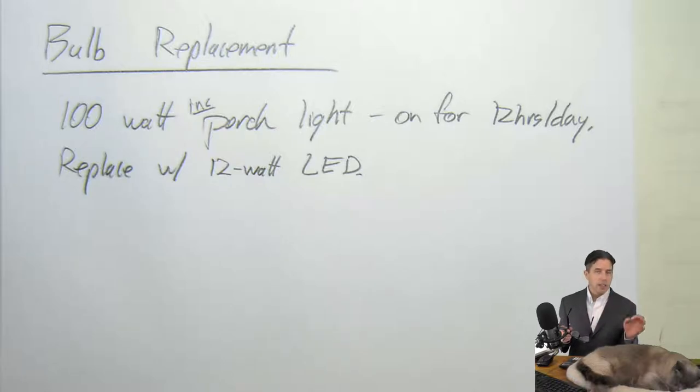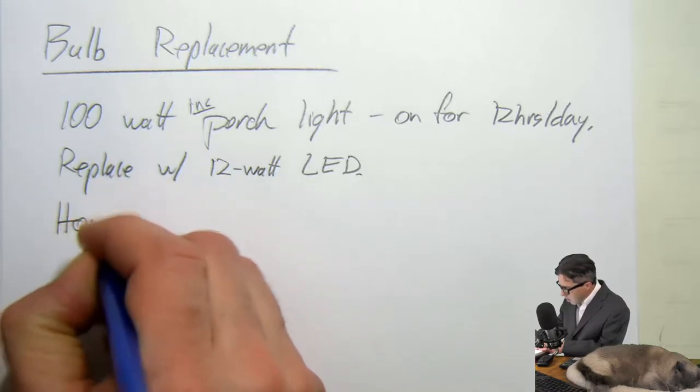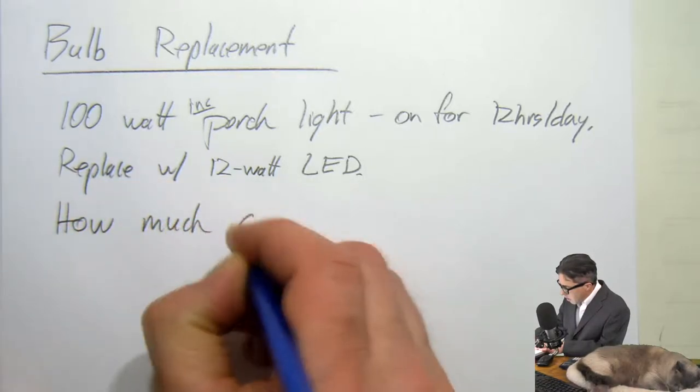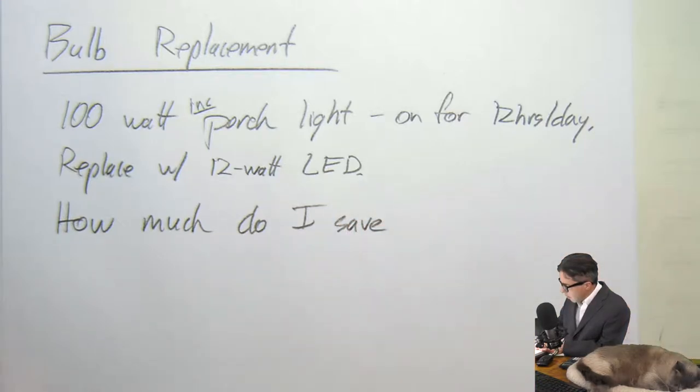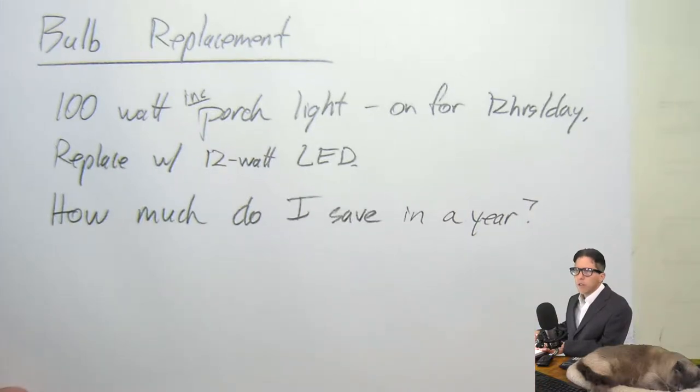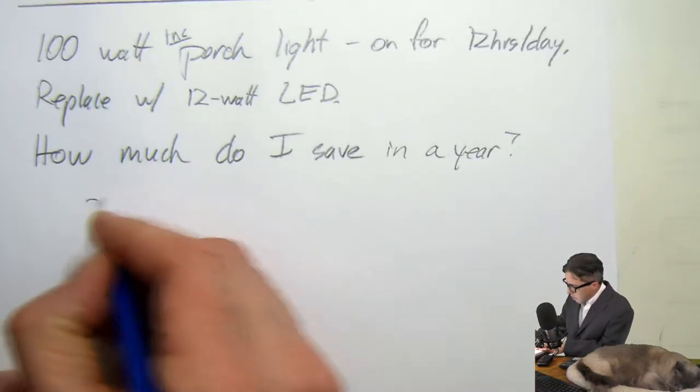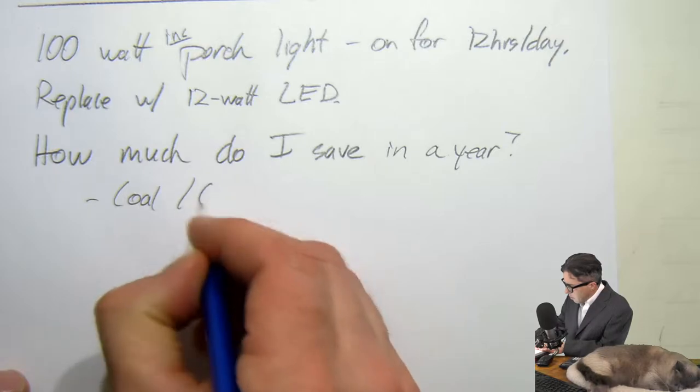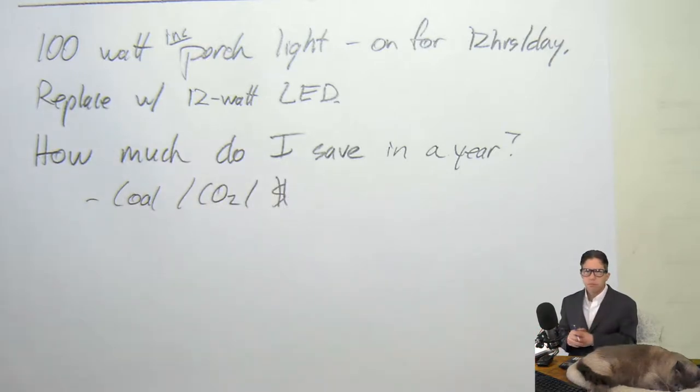So 100 watt light bulb incandescent for 12 hours a day, I swap it out with a 12 watt LED that makes the same amount of light but only uses 12 watts, 12 hours a day. How much do I save in a year? That's the question, right? And we can ask this question several ways. That could be coal, that could be CO2, that could be money.